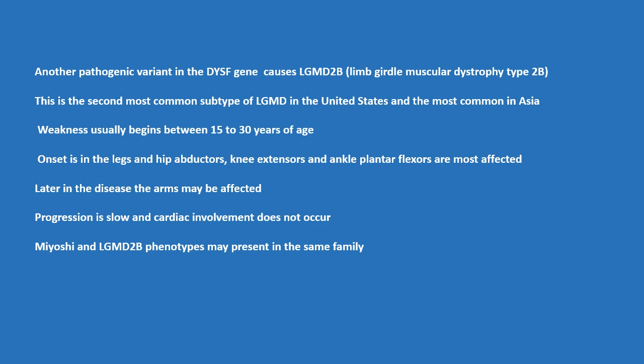Another pathogenic variant in the DYSF gene causes LGMD2B, or limb girdle muscular dystrophy type 2B. This is the second most common subtype of limb girdle muscular dystrophy in the United States and the most common in Asia. Weakness usually begins between 15 to 30 years of age, with onset in the legs.